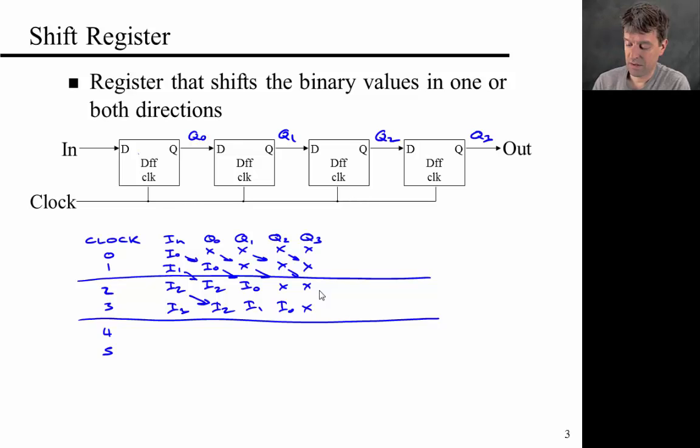And at the fourth clock cycle, you've now filled the full four-bit number into this register. Okay, and then of course this continues, and you're shifting in bits one bit per cycle to the right. Good, so that's relatively straightforward and I think you probably already knew this.